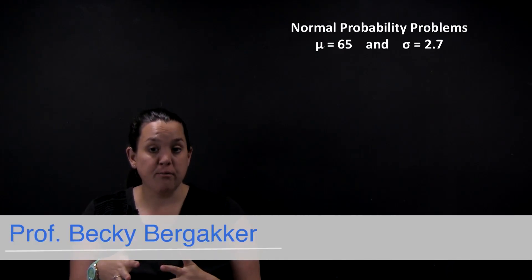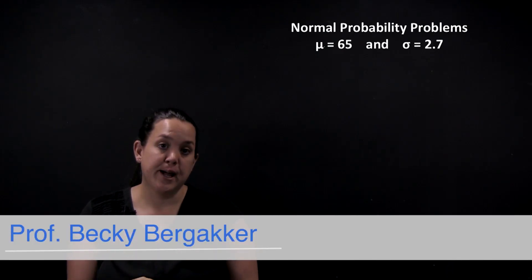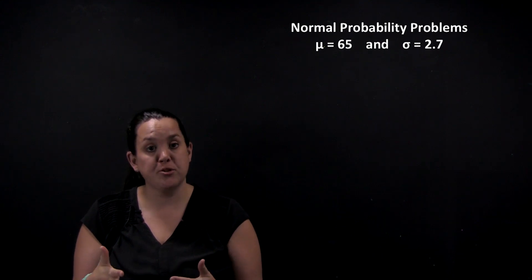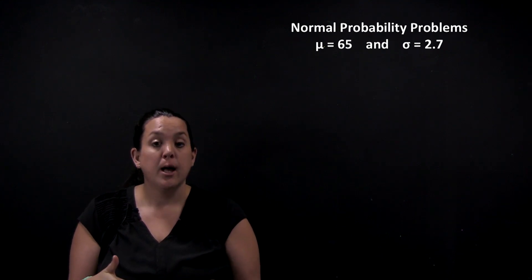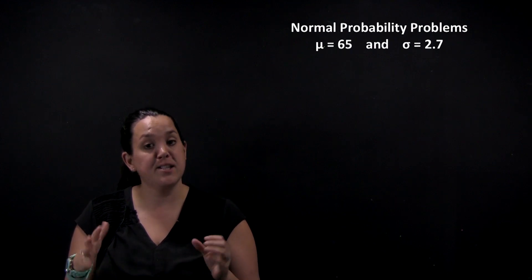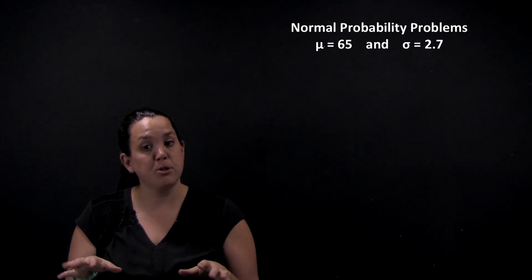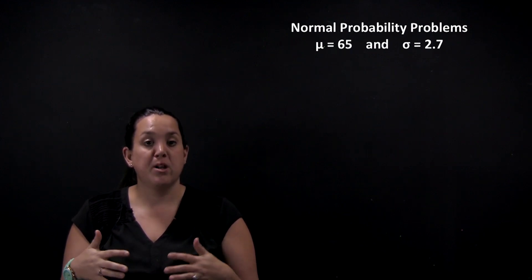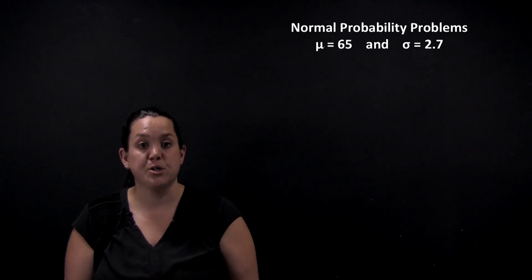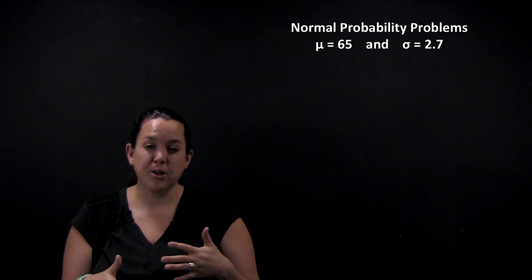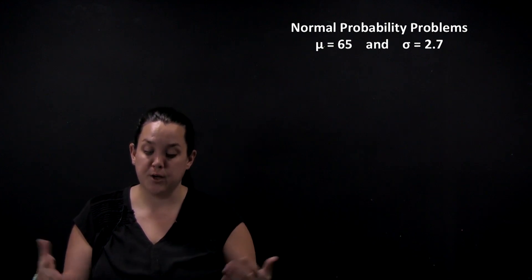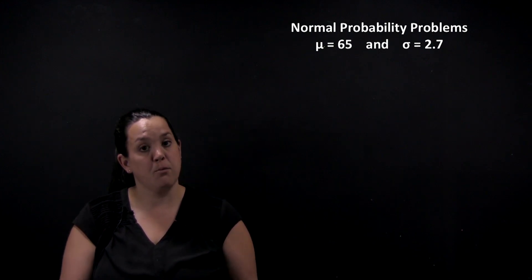Today we're going to continue our conversation on the analysis of one quantitative variable. We've been discussing the normal distribution, and in the last few videos we looked at the empirical rule, which is really nice to give you a snapshot of the population, but it's limited to just one, two, or three standard deviations away from the mean. So today we're going to talk about situations where you're not exactly one, two, or three standard deviations away from the mean.